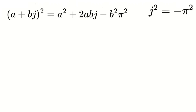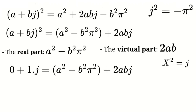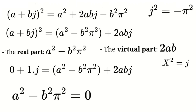Now let's separate this equation into real and virtual parts. The real part is a² minus b²·π², while the virtual part is 2ab. Since x² must equal j, we equate these terms to the real and virtual parts of j. The real part of j is 0 and the virtual part is 1. This gives us two equations: first, a² minus b²·π² equals 0; second, 2ab equals 1.